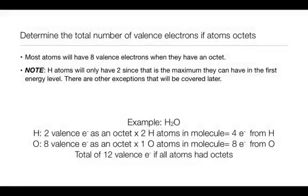Let's look at an example. In water, we have two valence electrons in each hydrogen if they were to have an octet. There are two hydrogen atoms in a water molecule, so that gives us a total of four valence electrons from hydrogen if it were to have an octet.